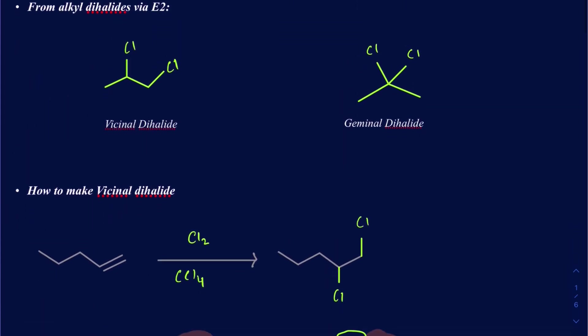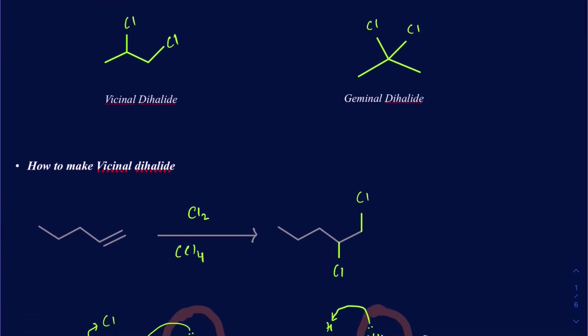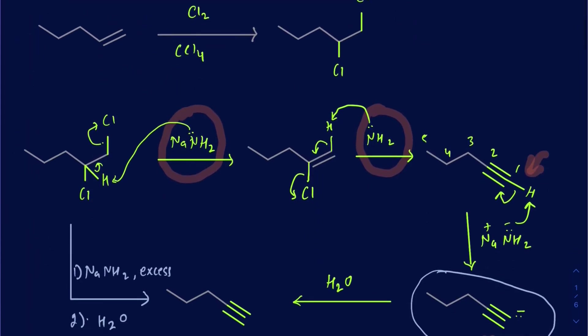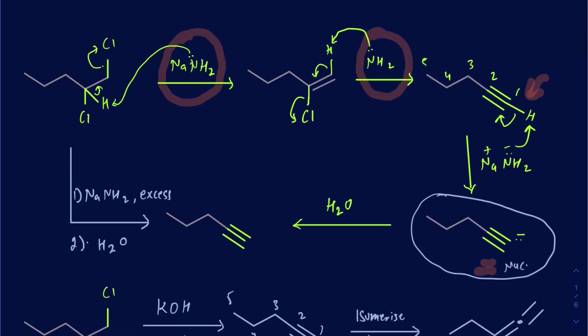This is the overall approach to forming alkynes — whether terminal or internal — and how to use terminal alkynes in subsequent synthesis steps, where the alkynide ion serves as both a nucleophile and a base in SN2-type carbon–carbon bond-forming reactions. Feel free to leave any questions in the comments.